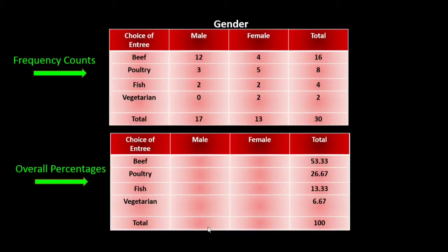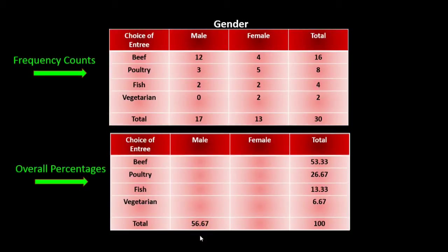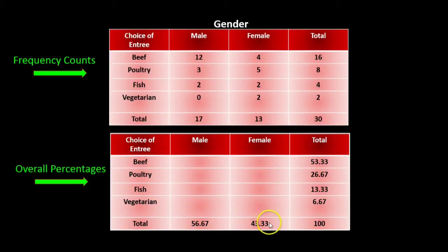We can also look at the data in terms of column percentages. Here we have 17 out of 30 males and 13 out of 30 females. So 17 divided by 30 gives us the column percentage of 56.67 percent. When we divide 17 by 30 we get 0.5667 and then turn that into a percentage by multiplying by 100. We can also look at the column percentage for females: 13 out of 30, which is 43.33 percent.